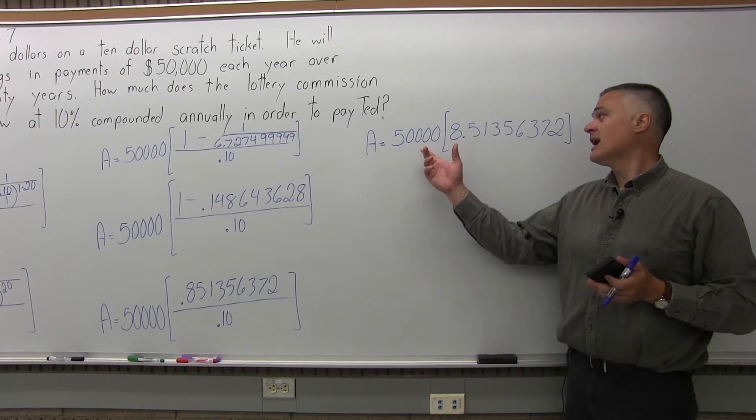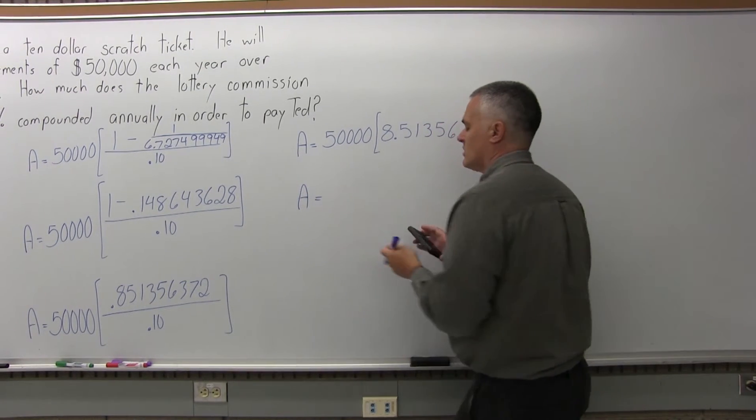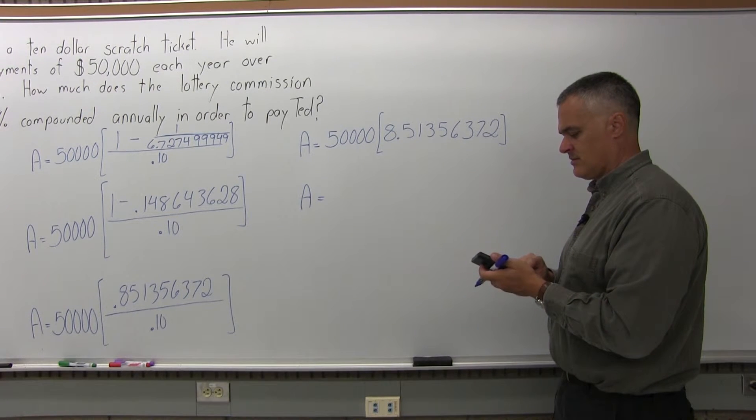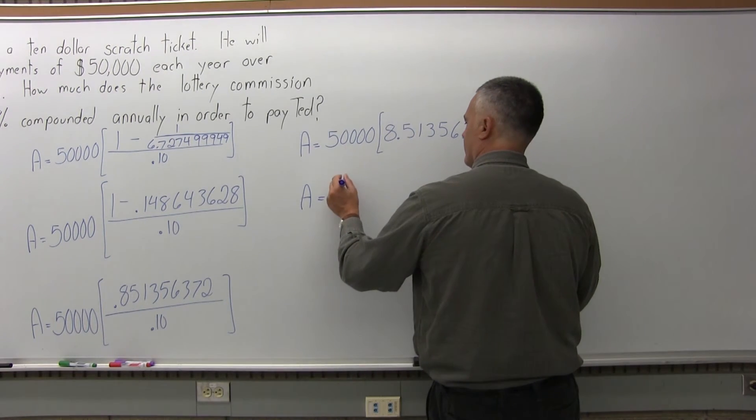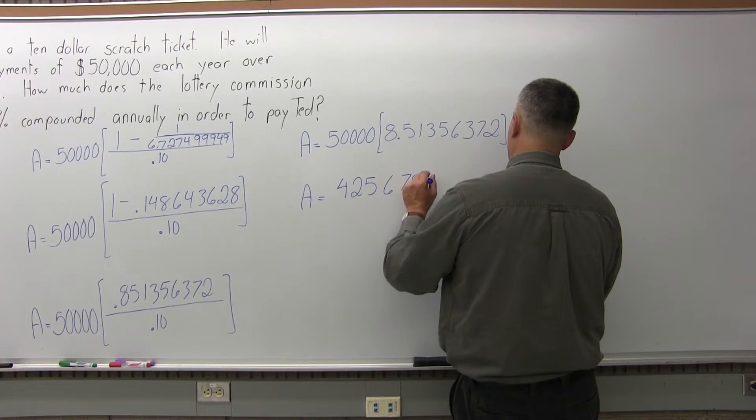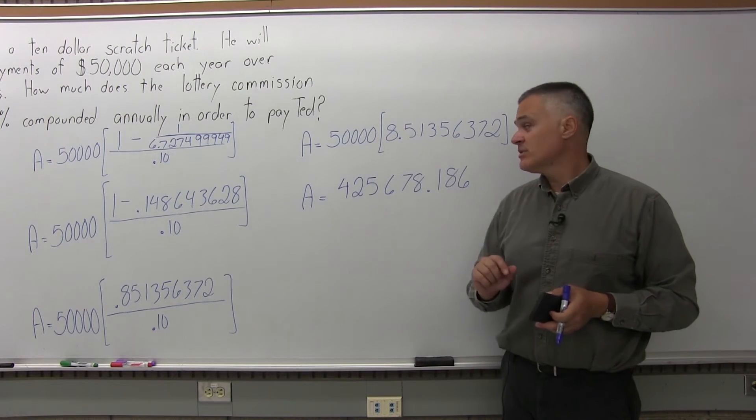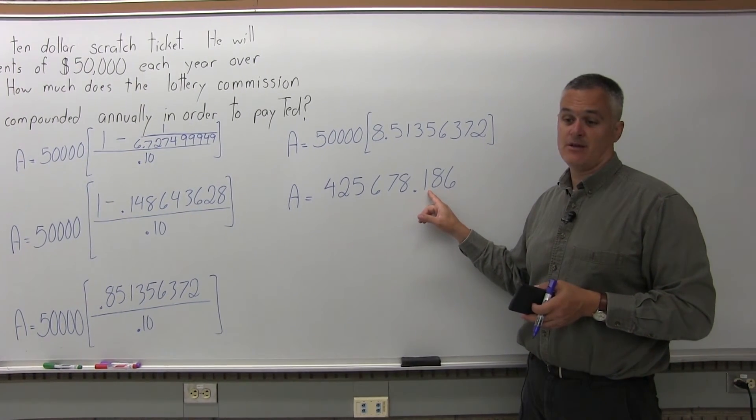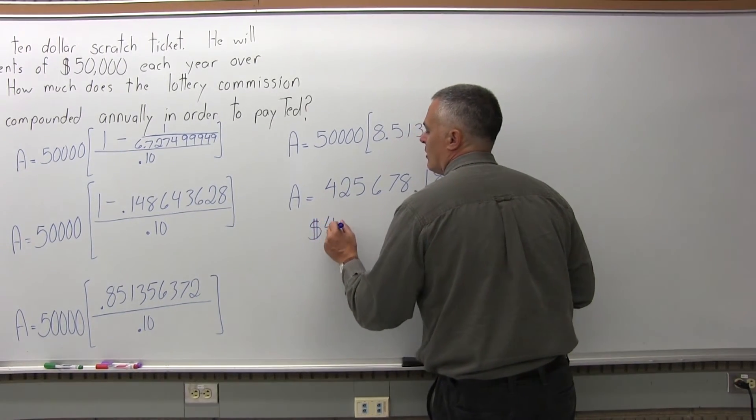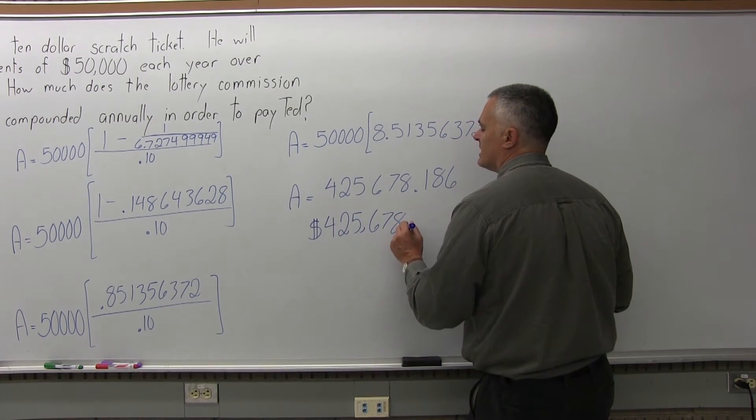So, to finish the problem, I'll do the 50,000 times the value in the brackets. So, it'll be 50,000 times 8.51356372. And the calculator says 425678.186. Now, that's the value on my calculator screen. The 186, I'm going to just call it .19 or 19 cents. So, the answer is $425,678.19.